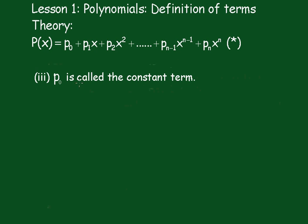Part 3: p0 is called the constant term. The term that does not have an x in it is called the constant term.